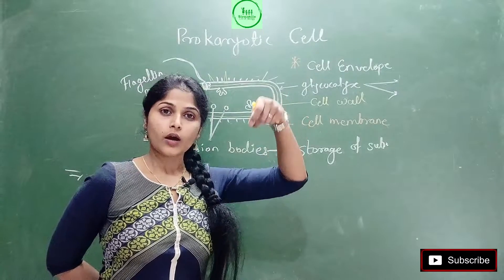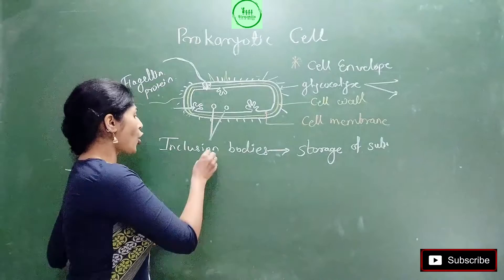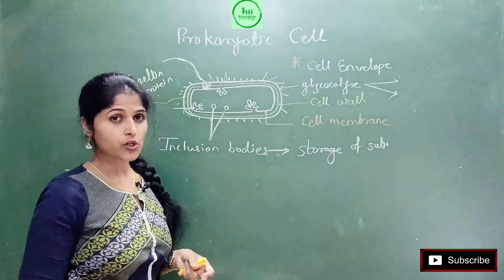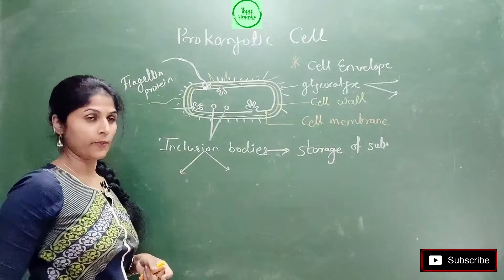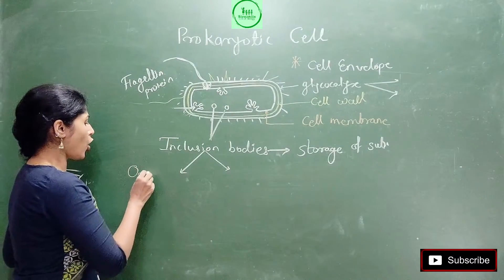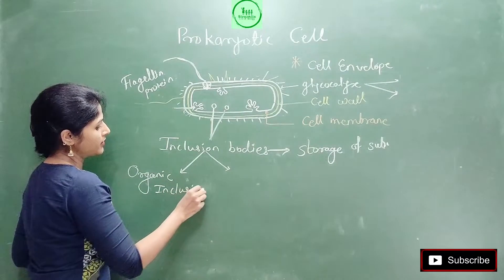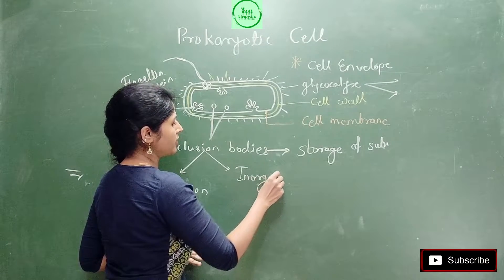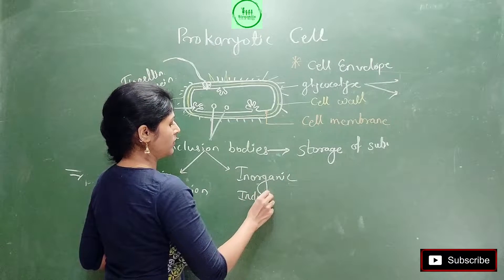Now what is meant by inclusion bodies? These are the circular elements which are important for storage, storage of substances. According to what type of materials are present inside this inclusion body, there are two types of inclusion bodies: one is called organic inclusion body and the other one is inorganic inclusion bodies.